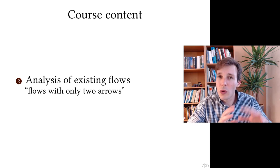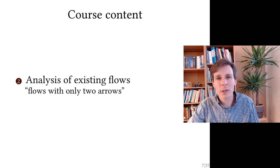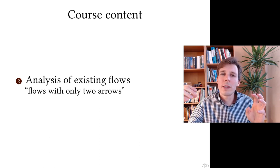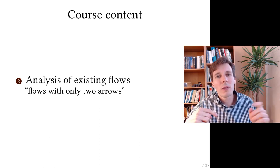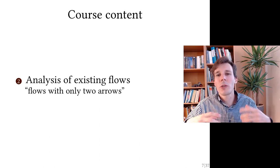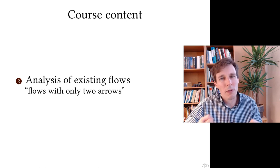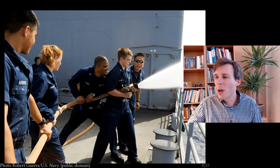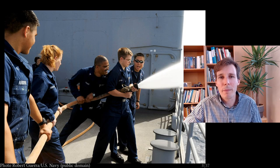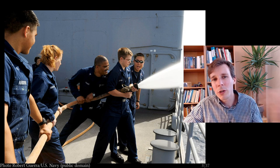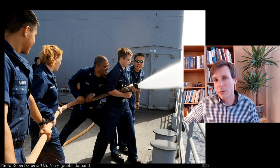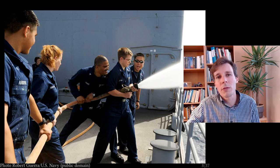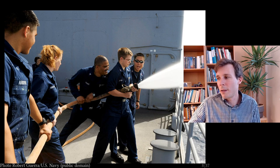Chapters 2 and 3 are analysis of existing flows — basically flows where there are only two arrows: one coming in, one coming out, and we try to figure out what the forces and power exchanges are involved. To give you one example, if you have a pipe with water shooting out of it, there might be a force exerting on the pipe holder. In this chapter we'll learn to quantify those things.